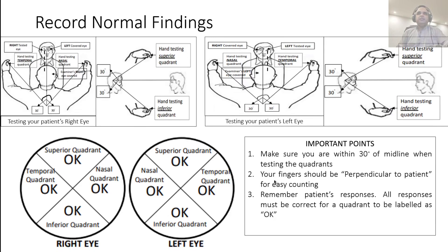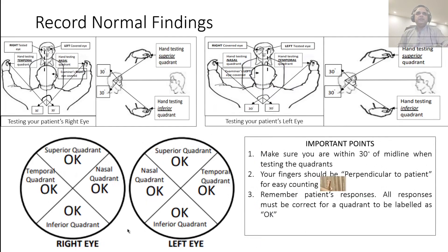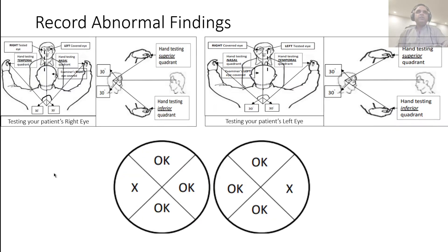Use the template with right and left eye quadrants and record 'okay' for each. Also make sure your fingers are perpendicular — if they are parallel to the patient they will not be able to count them correctly. All responses in a quadrant must be correct for it to be labeled 'okay.' For abnormal findings, simply put an 'X' instead of 'okay.' This becomes an exercise: can you identify which type of visual field defect you are looking at from the recorded findings?